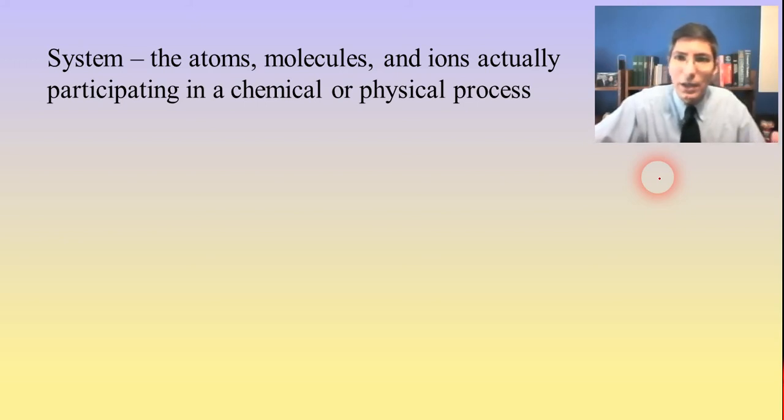When we talk about the surroundings and the system—the soup in this case—the system is specifically talking about the atoms and the molecules and the ions that are actually participating in a chemical or physical process. That means that in a chemical reaction, we're talking about the things that actually appear in the chemical equation. They're actually going to be written down. Maybe the catalyst, if you have one of those—that's the system.